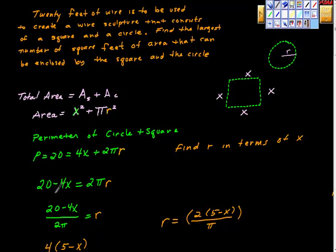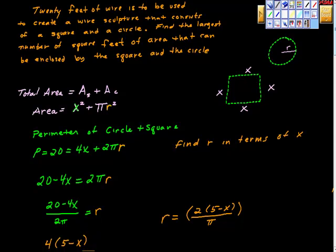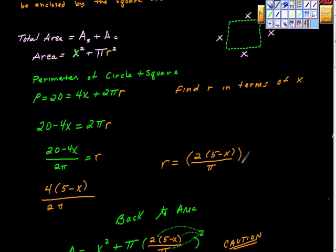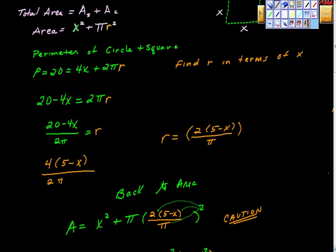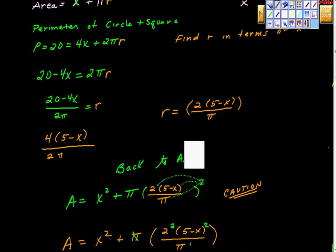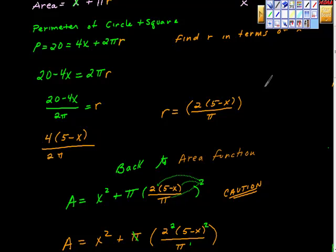So with a little bit of algebra, we solve for r. We backed out a four and ended up with two over two, so the π in the numerator and denominator simplified. Here's our radius: r = (10 - 2x)/π. Now we go back to the area function - A = x² + πr² - and since we now have r in terms of x, we plug it in.